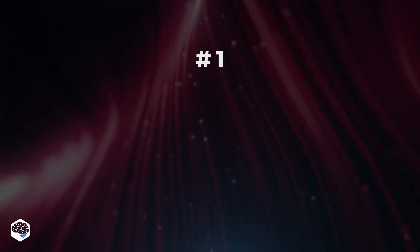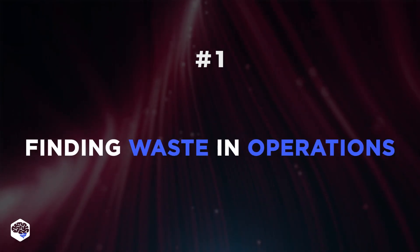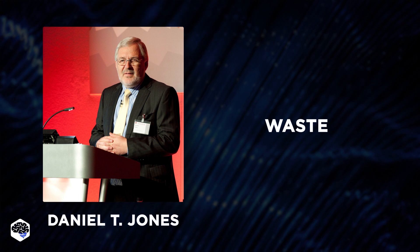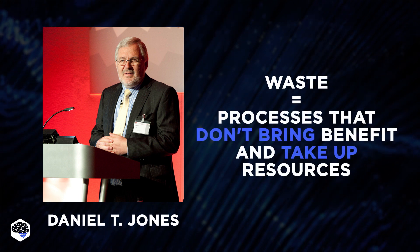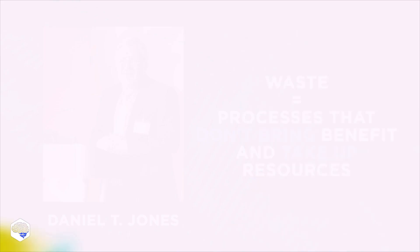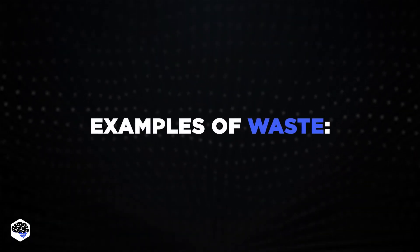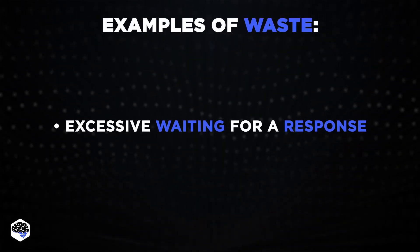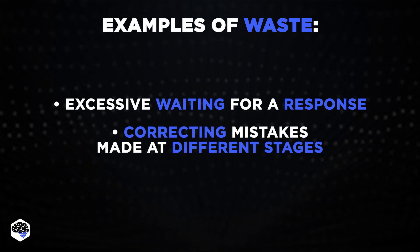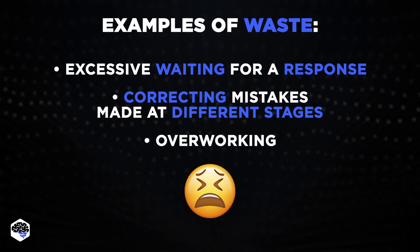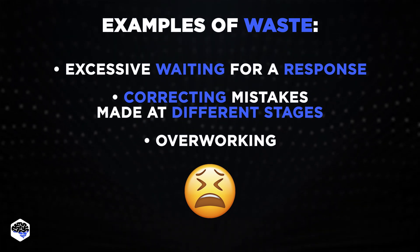Let's see what we're talking about. First, we at Jelvix noticed that visualizing operations helps to find waste in operations. The word waste was used by the researcher Daniel T. Jones to call all processes that do not directly benefit the client and take up team resources. Such waste clogging up the production chain can be, for example, excessive waiting for a response or order, correcting mistakes made at different stages of the chain, or overworking, implying a desire to provide a better quality product than the customer demands.